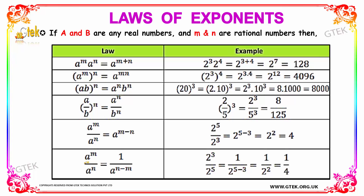The final law: a to the exponent m divided by a to the exponent n, when m is less than n, equals 1 divided by base a to the power n minus m. For example, 2 to the exponent 3 divided by 2 to the exponent 5 equals 1 divided by 2 to the exponent of 5 minus 3. Since 5 minus 3 is 2, we get 1 divided by base 2 to the exponent 2, which is 1 divided by 4. Hope you got a clear picture of how these laws of exponents have been deployed, considering a and b as any real numbers and m and n as rational numbers.